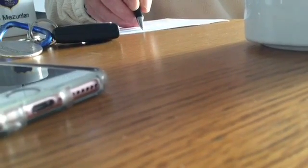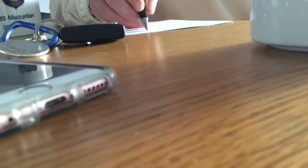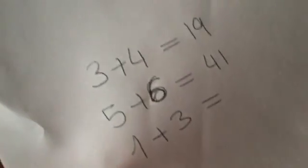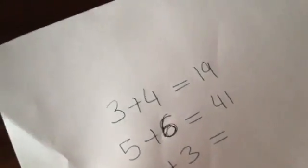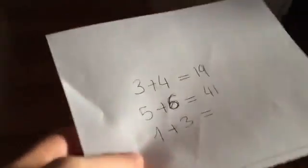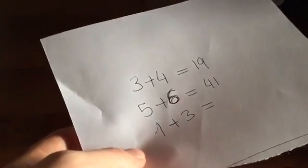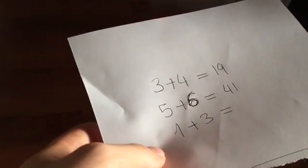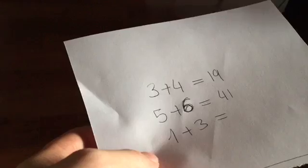So 5 times 6 is 30, plus 11. The answer is 11. No. Yes, it is. 11. 5 times 6 is 30, plus 11. 41. Correct. So 1 times 3 is 3, plus 4. 7. You're right. The answer is 7.